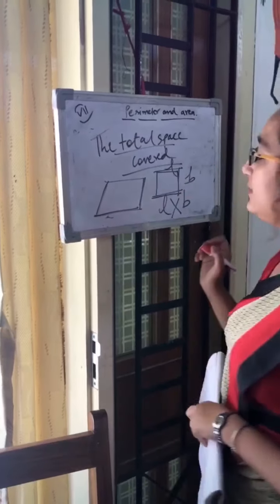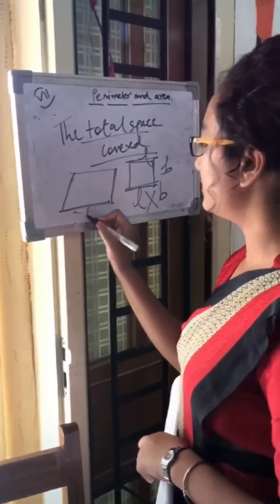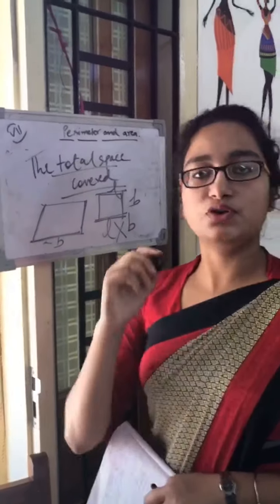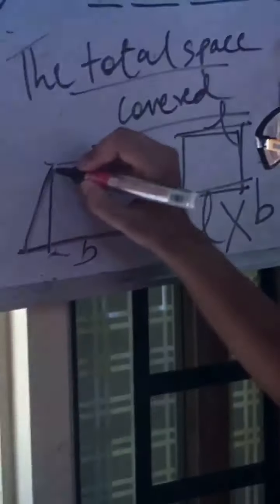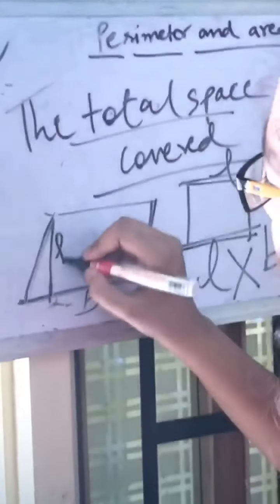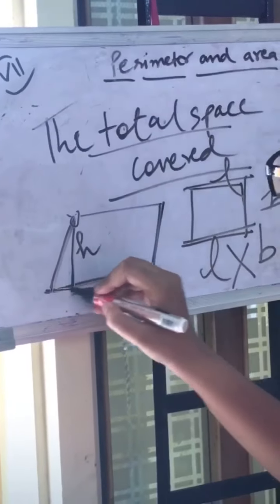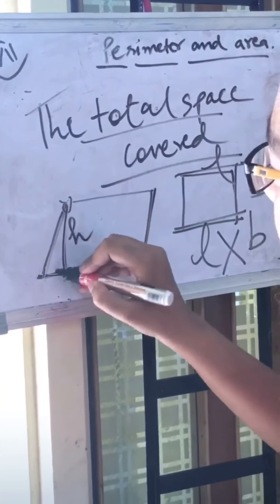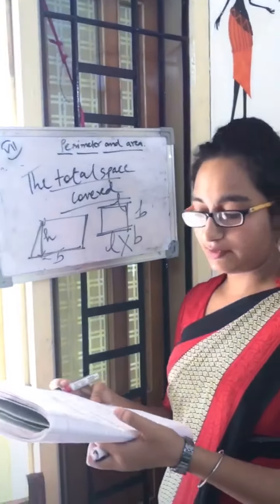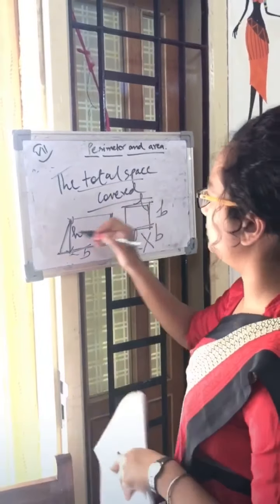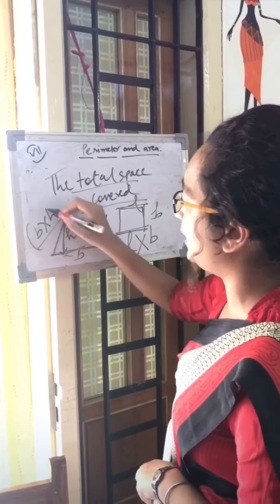For a parallelogram, if we need to find the area, we know this is a base. First, we have to draw a perpendicular line from the vertex to the base — this gives us the height. Height is the distance from any corner vertex drawn perpendicularly to its opposite side. So the area of a parallelogram will be B × H, that is base into height.